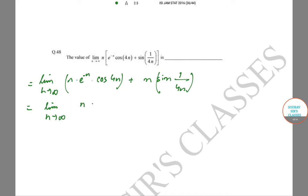Now this is equal to infinity times [n·cos(4n)/eⁿ] plus [sin(1/4n)/(1/4n)] times 1/4.